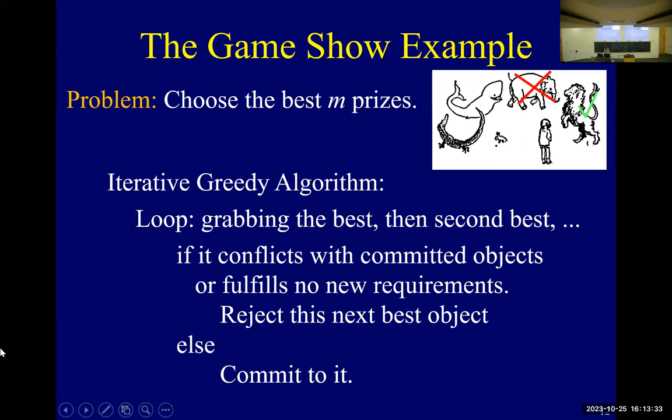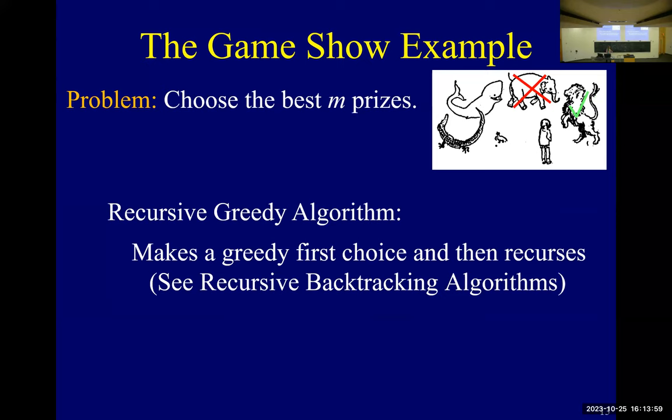So here's the code. You grab the best, the second best. And as you grab them, you see does this next object conflict with what I've taken so far? And if it doesn't, then you might as well take it. And if it does, then you throw it away. And we're going to see later that there's an adaptive and a non-adaptive version. And depending on as you grab objects, does what looks best in the future change? If it doesn't change, then we might as well just sort the objects at the beginning.